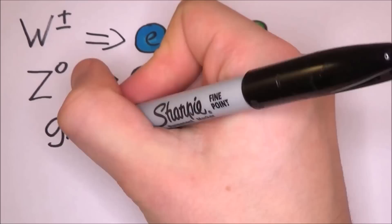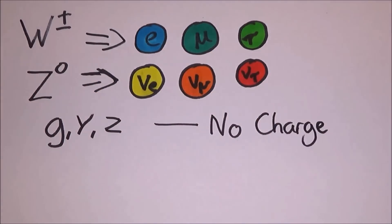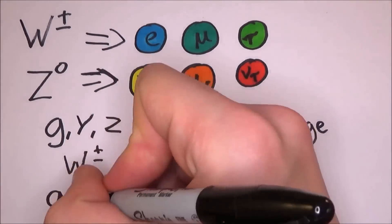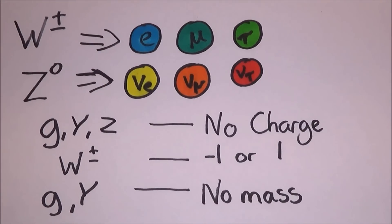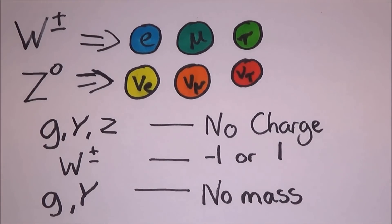All of the bosons have no charge except for the w, which has a plus and a minus charge, which is why there's two of them. Gluons and photons actually have no mass, and so they travel at the speed of light, according to general relativity. This actually leads to an interesting point about travelling at the speed of light.